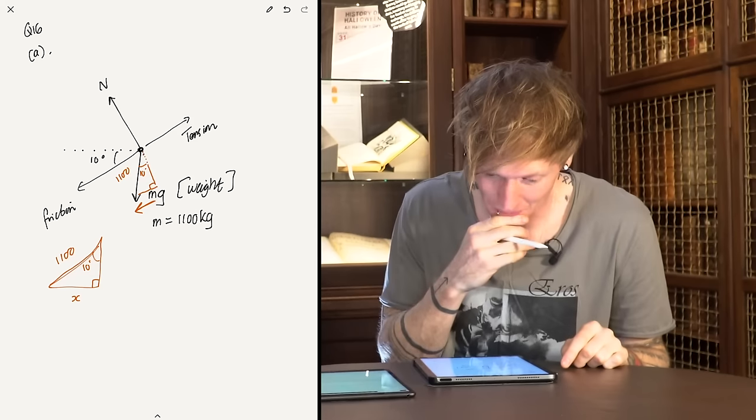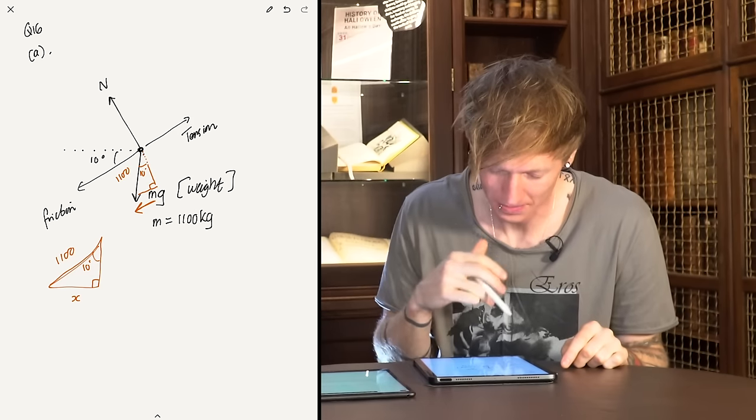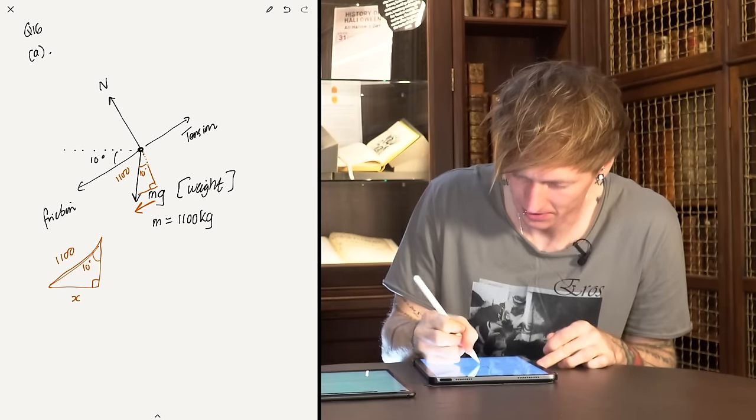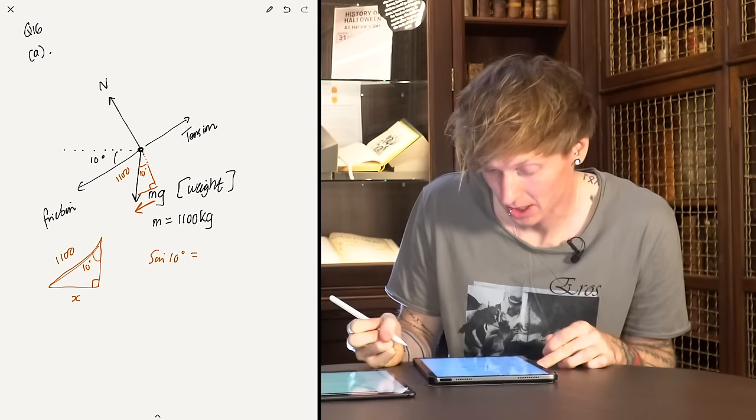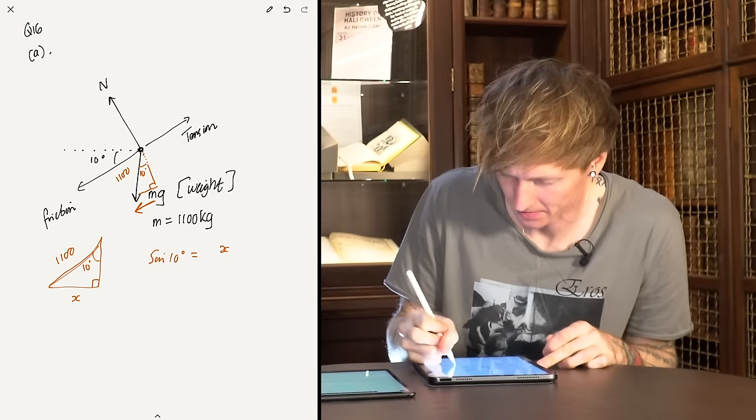I have the right angle, I want this side X, I know the hypotenuse is 1100, and I know this angle is 10 degrees. So I should be able to use trigonometry — SOH CAH TOA. My mum told me: Silly Old Harry Caught A Herring Trawling Over America. SOH CAH TOA is also quite catchy. I know the hypotenuse and I want the opposite, so I'm using sine. Sine of 10 degrees equals X divided by 1100.